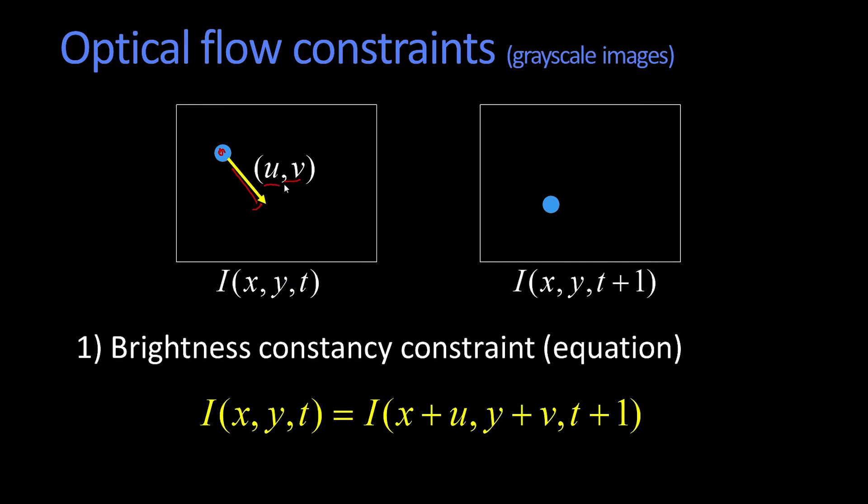Where u and v are the amount the point has moved in the x direction and the y direction respectively. So that's called the brightness constancy constraint. And in fact, I can rewrite it like this. Zero is equal to the x plus u, y plus v, t plus 1 image, minus the original I of x, y, t. All right, that's the brightness constancy constraint.